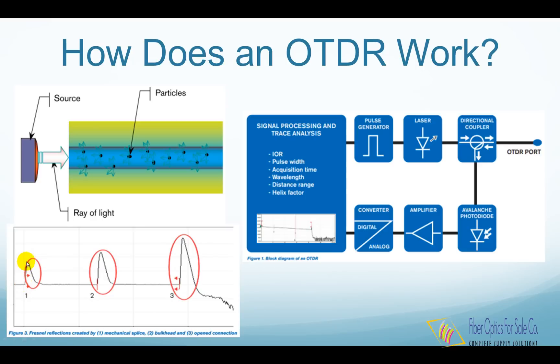Fresnel reflection can be seen as spikes in the OTDR trace. Examples of such reflections are connectors, mechanical splices, bulkheads, fiber breaks, or open connectors.